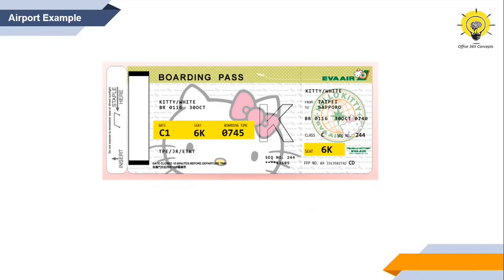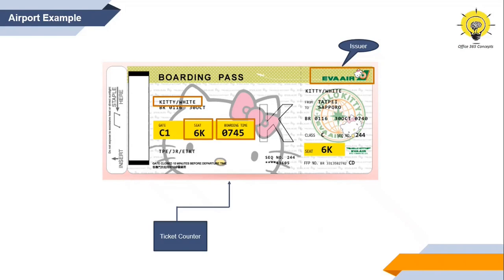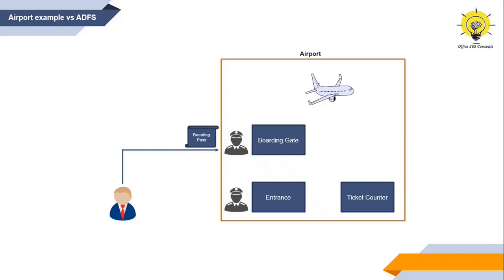If you check the boarding pass, it includes information about which airline issued it, your name, which flight you're allowed to board, the time of the flight, and your seat number. There are multiple ways to get a boarding pass — you can collect it from the ticket counter or book online and print it at home. The boarding gate agent doesn't care how it was created or which issuer you used. As long as it is trusted by the airline and has an authentic set of information giving you permission to board, it is valid.